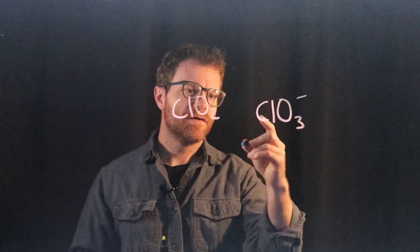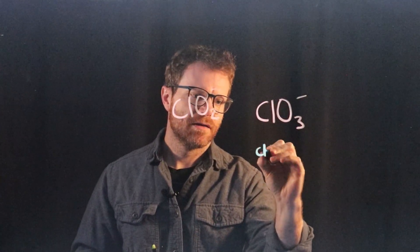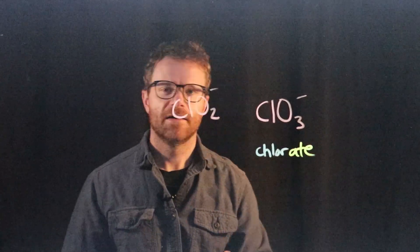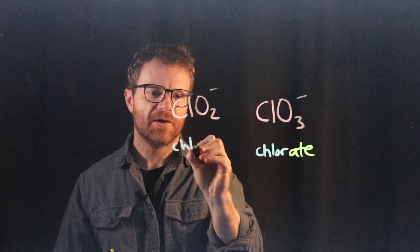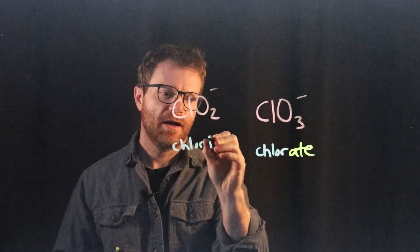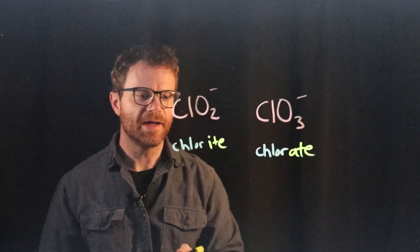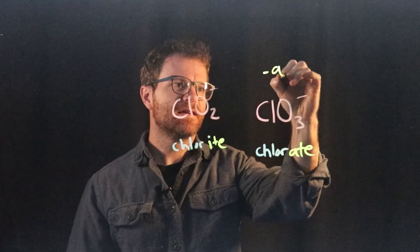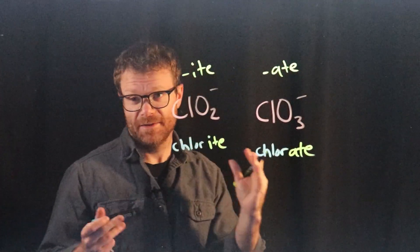Okay, if you said the one with more oxygens is chlorate, you're correct. And the one with less oxygens, we're going to call that chlorite. Remember, the more oxygens, it gets the -ate suffix. Fewer, it gets the -ite suffix.